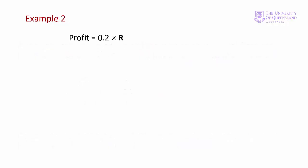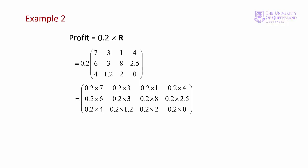Well, profit is 0.2 of revenue. So we multiply our revenue matrix by 0.2. That means we multiply each element in the revenue matrix by 0.2. And there's our solution.